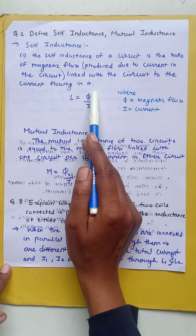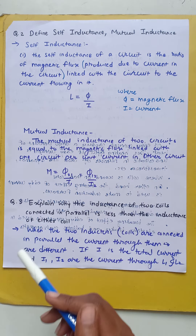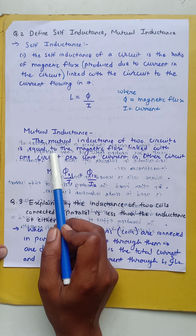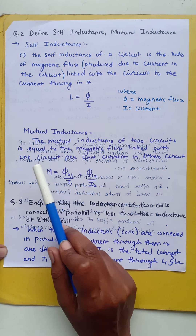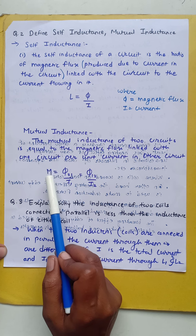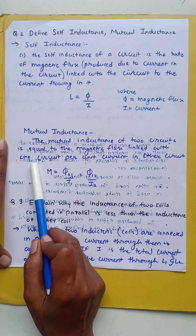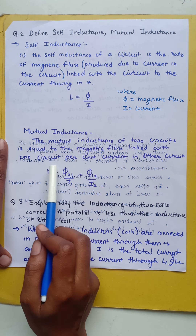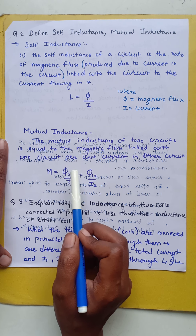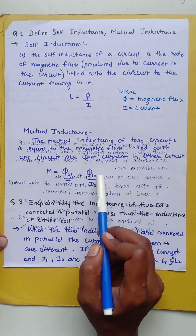Self-inductance is the ratio of magnetic flux linked with the circuit to the current flowing in it, where phi is magnetic flux and I is current. Similarly, mutual inductance is defined as: the mutual inductance of two circuits is equal to the magnetic flux linked with one circuit per unit current in the other circuit. Here M stands for mutual inductance. So phi₂₁ is the magnetic flux in the second coil due to the first coil divided by the current in the first coil, or the magnetic flux in the first coil due to the second coil divided by the current in the second coil.